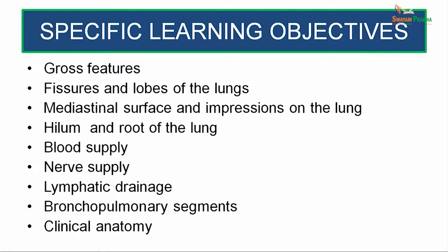The specific learning objectives for this session are: we would discuss the gross features of the lungs, talk on the fissures and lobes of the lungs, explain the mediastinal surface and impressions on the lungs, the hilum and root of the lungs, discuss the blood supply and nerve supply, review the lymphatic drainage, and talk on bronchopulmonary segments and various clinical anatomy pertaining to these topics.